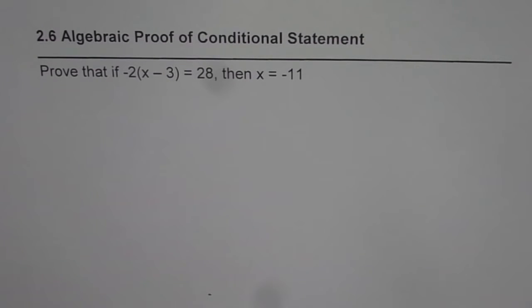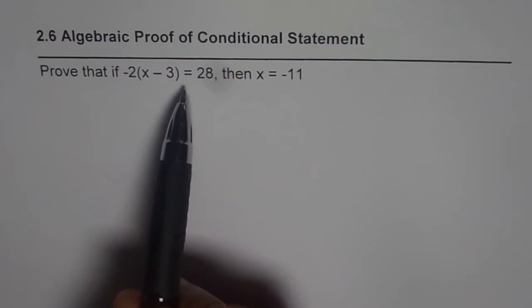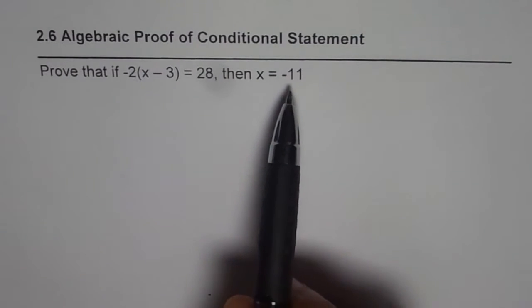I am Anil Kumar and in this video we will discuss algebraic proof of conditional statement. The question before us is: prove that if -2(x - 3) = 28, then x = -11.